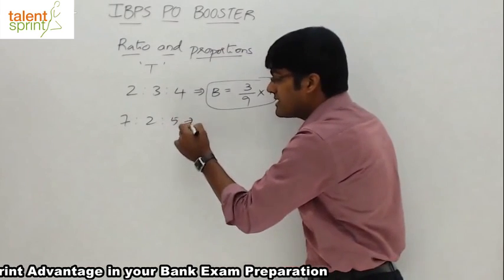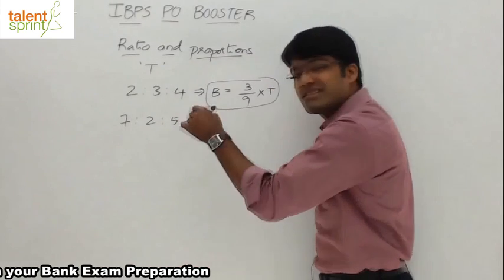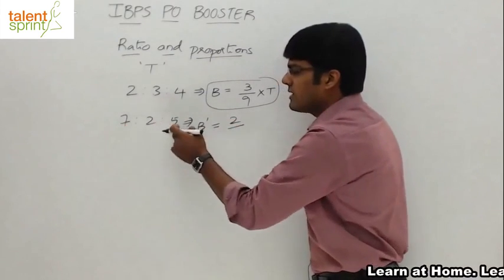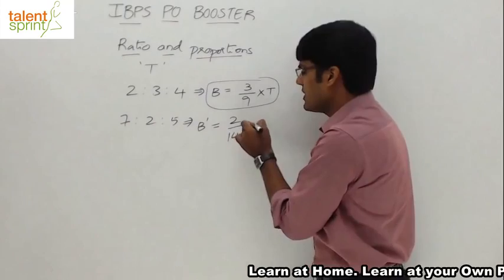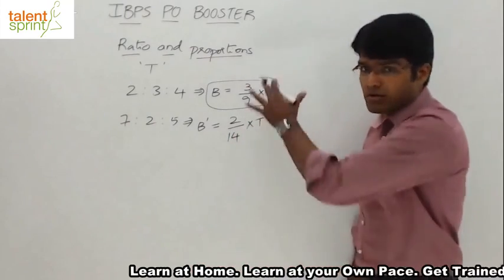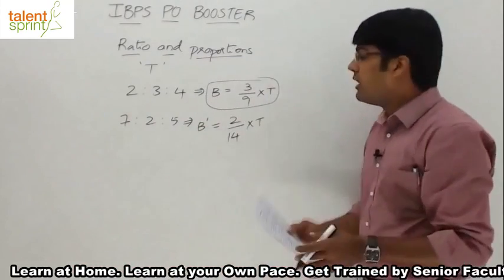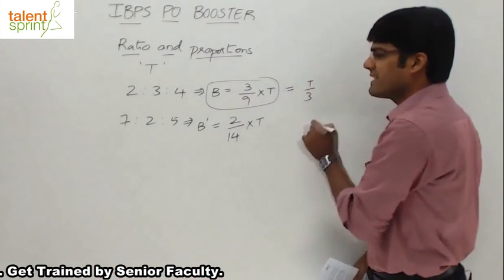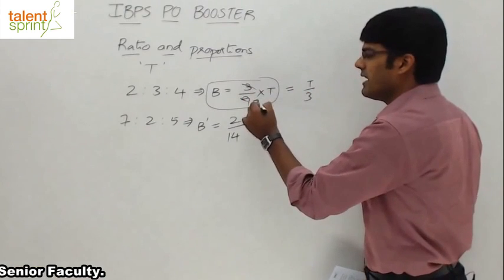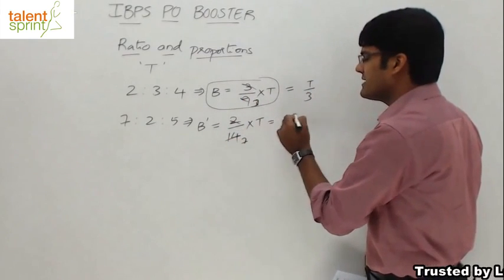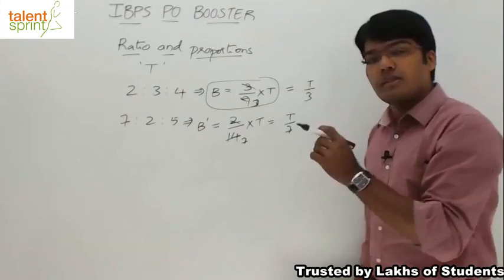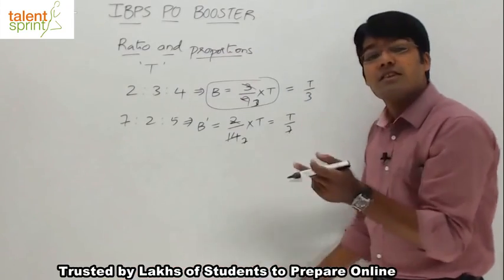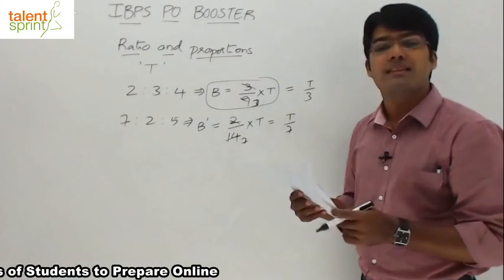In the wrong distribution of 7:2:5, B gets 2 parts out of 14 total — that is, 2/14 × T, which is T/7. So the actual value of B should be T/3, but B actually got T/7, and because of this difference, B has got 40 rupees less.